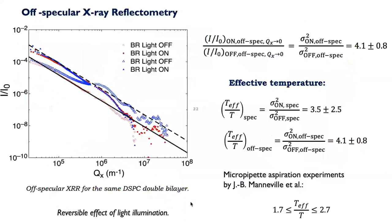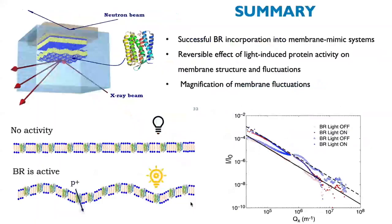This analysis will allow us to get elastic parameters like bending modulus, surface tension, and interaction potential. Although the detailed analysis is in progress, from a rough analysis of the ratio of intensity with light on and off — which is proportional to the ratio of the square of the roughness — this is related to the ratio of effective temperature over the temperature of thermal fluctuations. From both specular and off-specular data, we find this ratio is around three to four, which is very close to what was found in the original micro-pipet experiments. In summary, we successfully incorporated this protein and detected a magnification of membrane fluctuations.